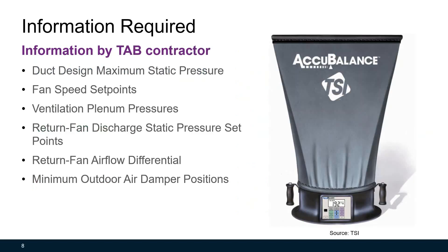Besides the design information, we also need to get some testing data from testing and balancing (TAB) contractors. Their job is to adjust the settings of installed HVAC equipment or air ducts so that pressures and airflows at the air handling unit or zone level are balanced and according to design. Such information includes duct design maximum static pressure, fan speed set points, ventilation plenum pressure, return fan discharge static pressure set points, return fan airflow differential, and minimum outdoor air damper positions.